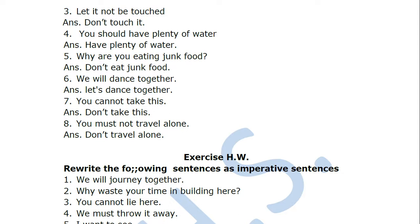'Okay, we will dance together.' Whenever you have 'we will,' 'she will,' or 'they will,' you start with 'let's': 'Let's dance together.' 'You cannot take this' — again you're telling someone not to do something, so the command is 'Don't take this.' 'You must not travel alone' — you're telling someone not to do something, so: 'Don't travel alone.'